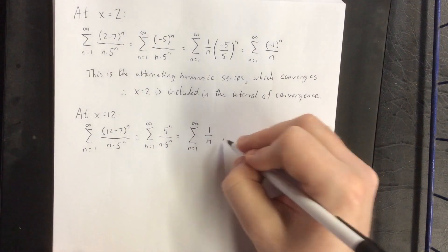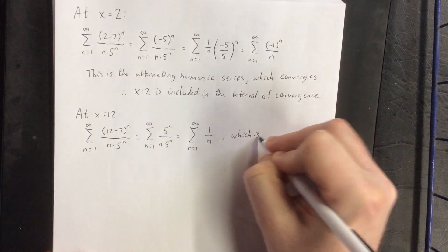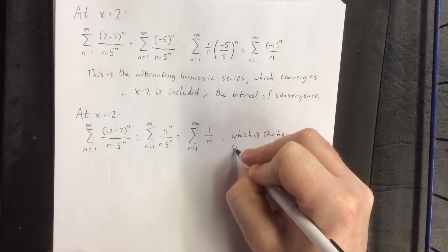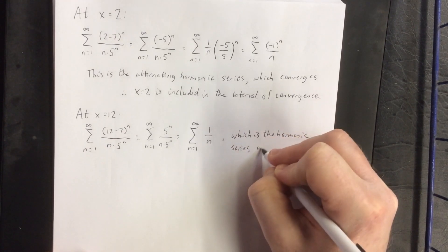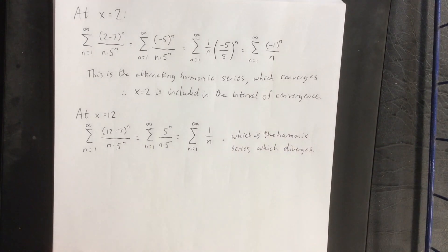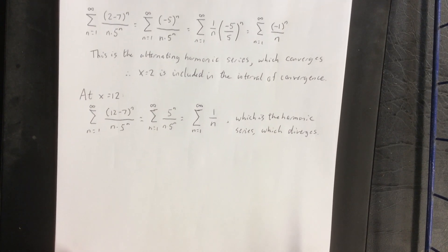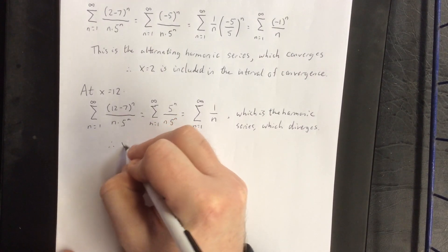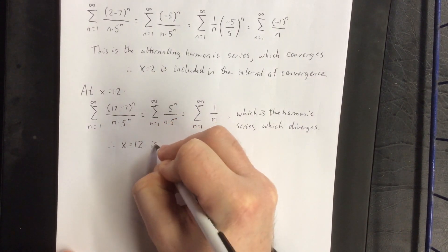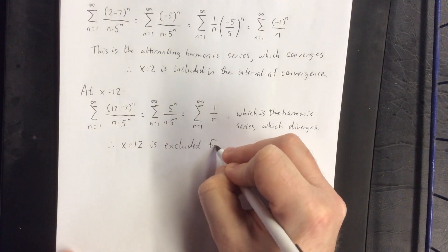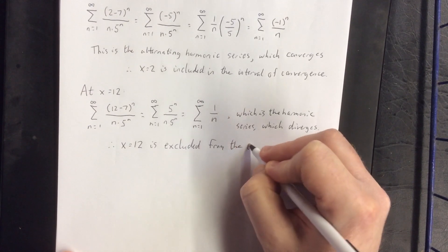The sum of 1 over n, this is the harmonic series, which we know from a previous test diverges. Therefore, at x equals 12, we do not get a convergent series. Therefore, at x equals 12, it is not part of the interval of convergence. So x equals 12 is excluded from the interval of convergence.